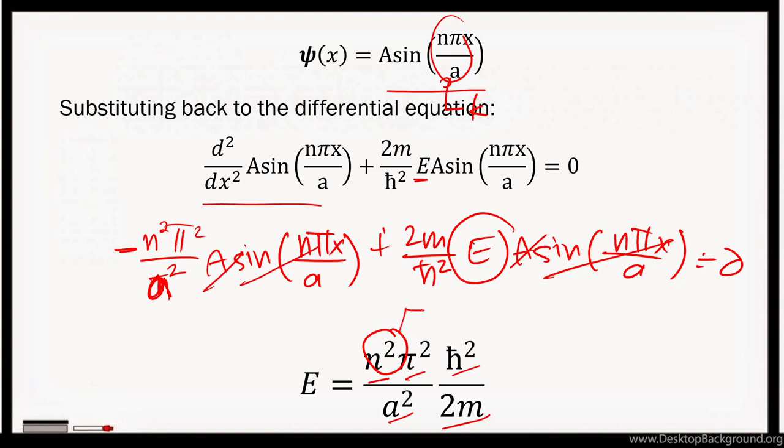The n can only assume integral values. So essentially, our energy is now quantized. It's not continuous anymore.